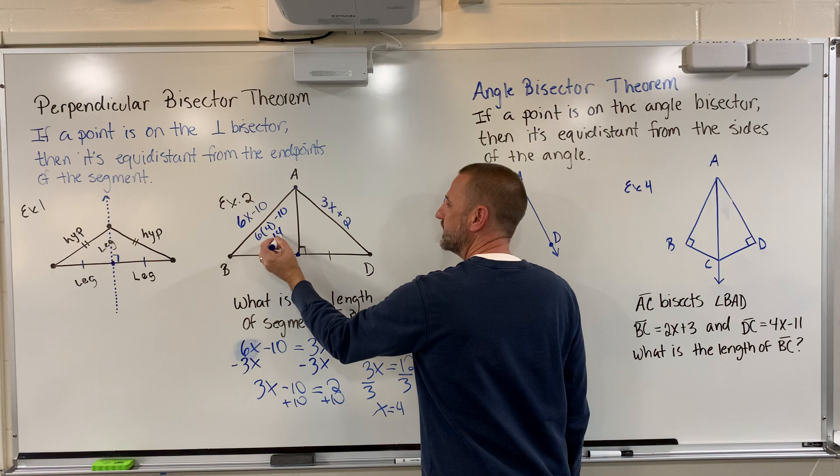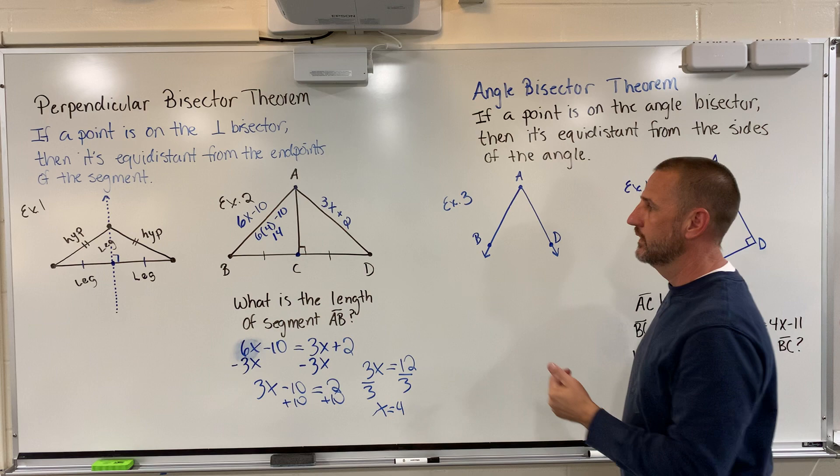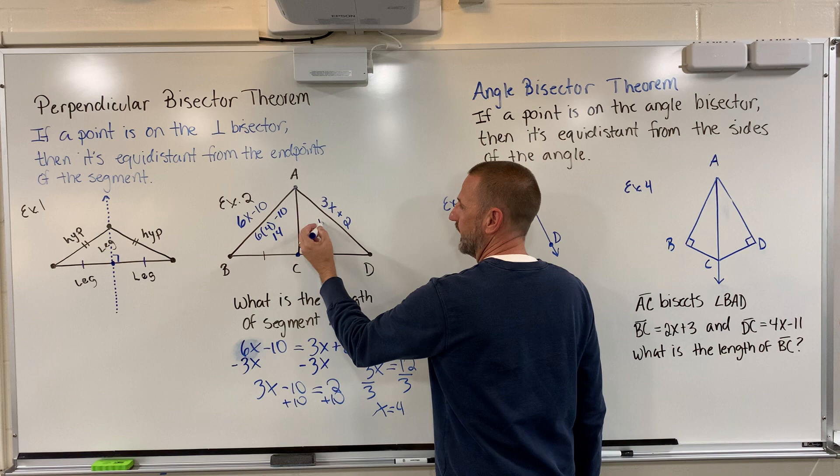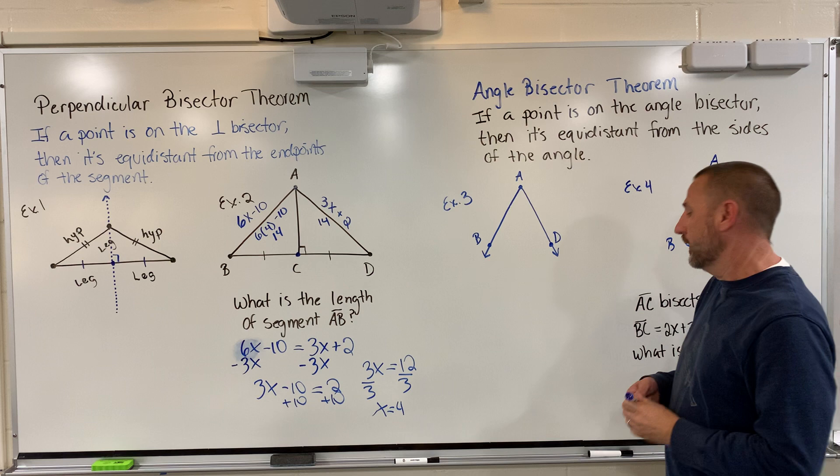Now although I did not write it, what would we also know about this? Segment AD would also be 14. Because if you plug that in, 3 times 4, 12, plus 2, 14. That kind of goes right along with what we were looking at when we looked at this theorem to begin with.